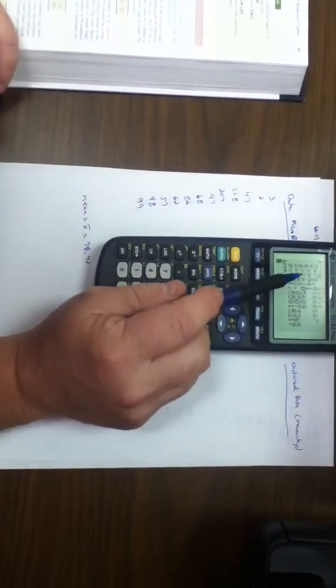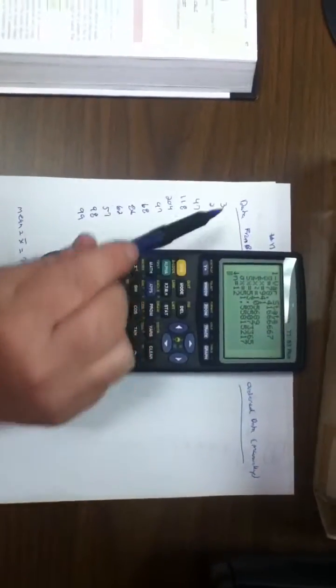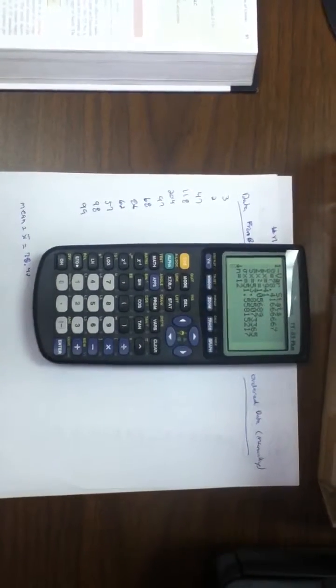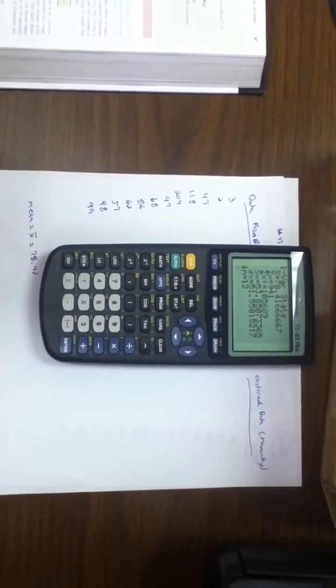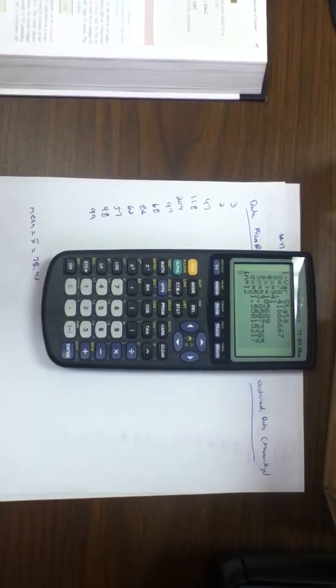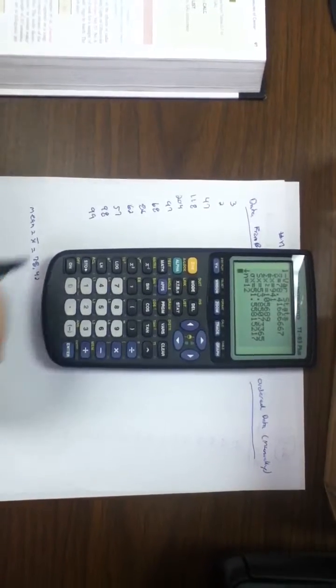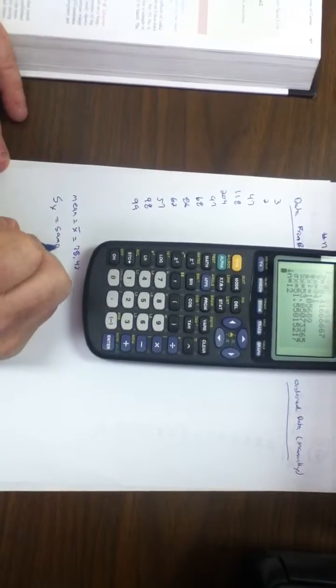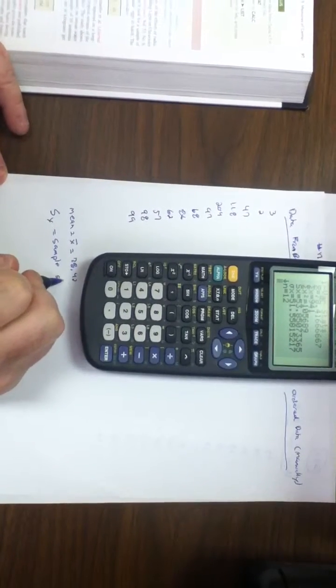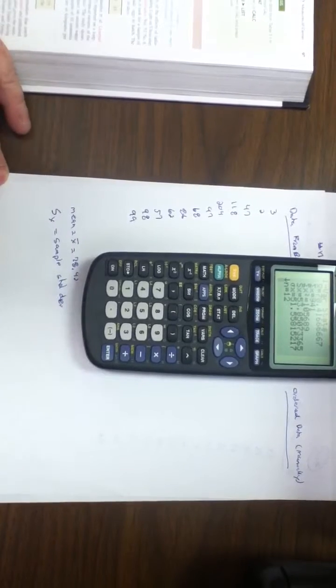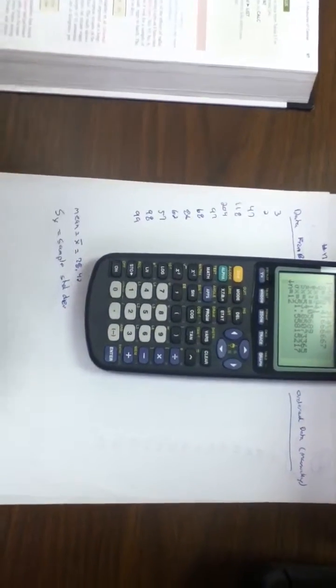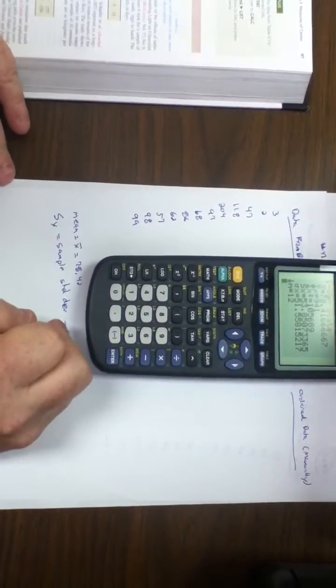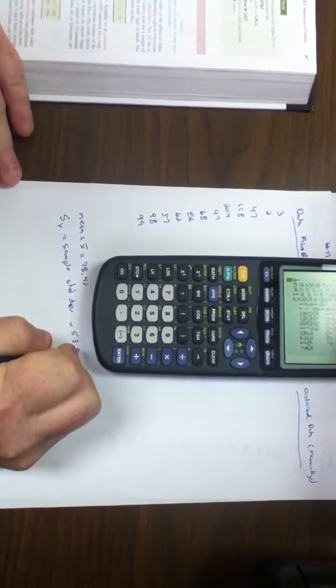Sum of X squares is the sum of each of the items squared. We use that manually if you had to use standard deviation, although the calculator gives us standard deviation. S of X is the sample standard deviation. In this case, it's 53.85.